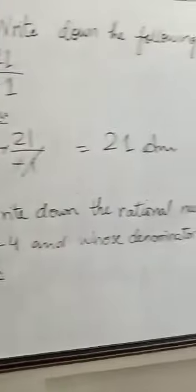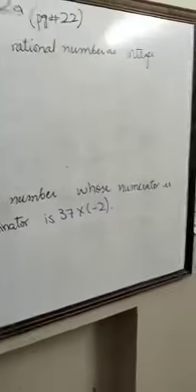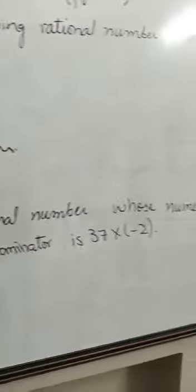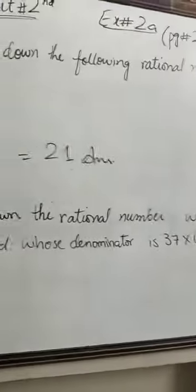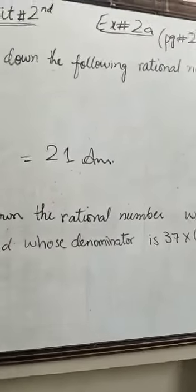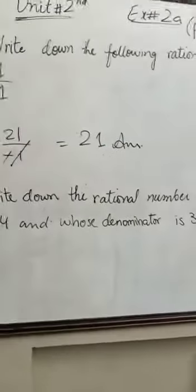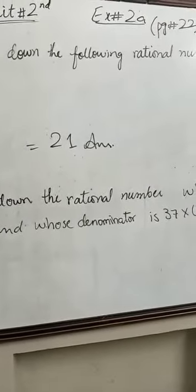Next, write down the rational number whose numerator is 15 minus 4 and whose denominator is 37 multiplied by minus 2. Now if you have written a rational number, you have written a fraction. The numerator is 15 minus 4 and its denominator is 37 multiplied by minus 2.